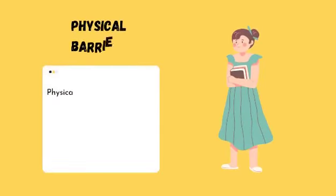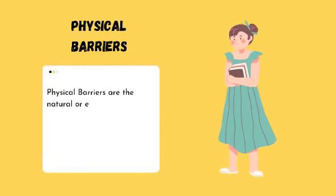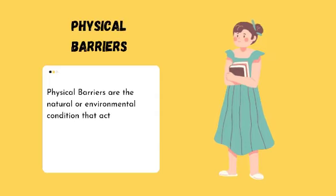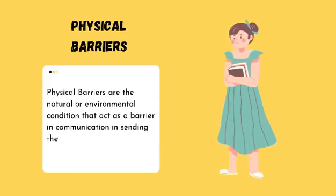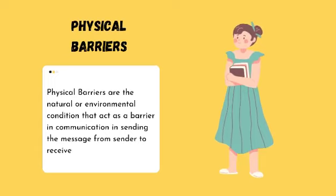Physical barriers. Physical barriers are the natural or environmental condition that act as a barrier in communication in sending the message from sender to receiver. For example, at our school.